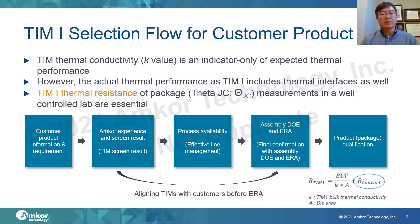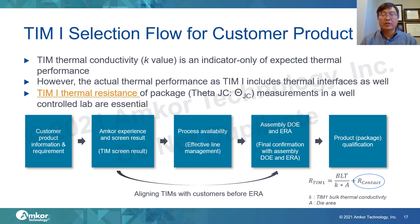This slide shows how to select team correctly as a team-on for customer product qualification. Team-on thermal resistance of the package — Theta JCA measurements in a well-controlled lab — are essential. As a result, we can quickly and correctly select the best team for customer product qualification using our thermal test capability.